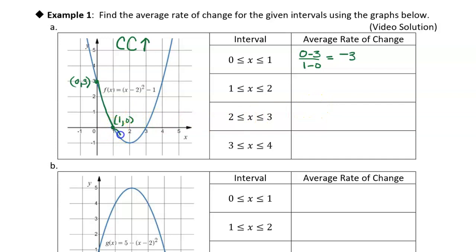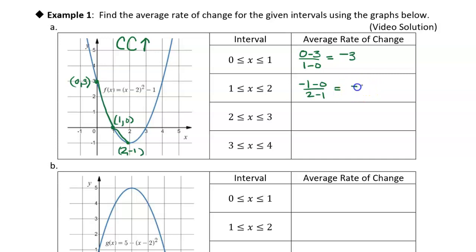For the next interval from 1 to 2, the next point is (2, −1). The average rate of change is (−1 − 0) / (2 − 1), which gives us negative 1.